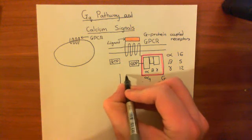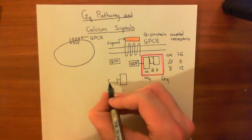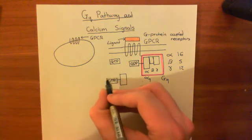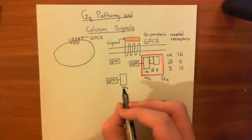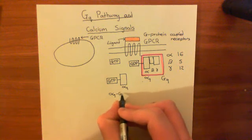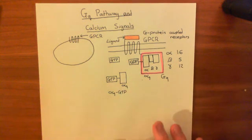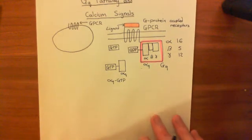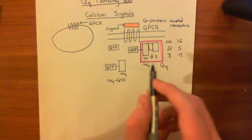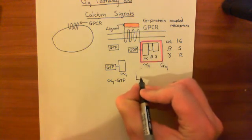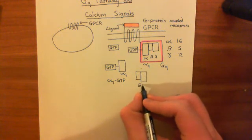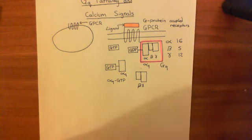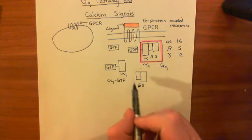You get an alpha subunit — specifically the alpha-Q subunit — that is now bound to GTP, written as alpha-Q GTP. Once GTP is bound to the alpha-Q subunit, it no longer wants to stay bound to the beta and gamma subunits. The beta and gamma subunits go off together and are hereafter denoted the beta-gamma subunit, while alpha-Q GTP has abandoned its beta-gamma subunit.